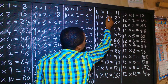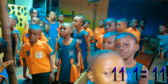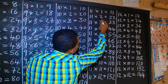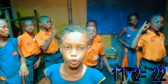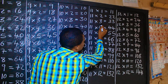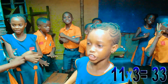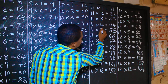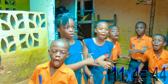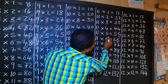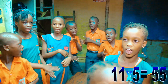Eleven times one is eleven. Eleven times two is twenty-two. Eleven times three is thirty-three. Eleven times four is forty-four. Eleven times five is fifty-five.